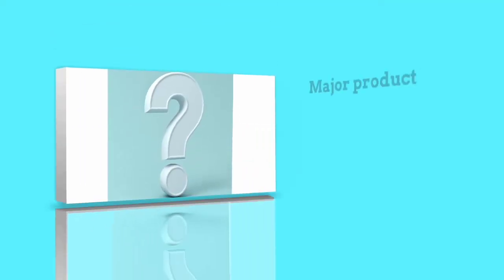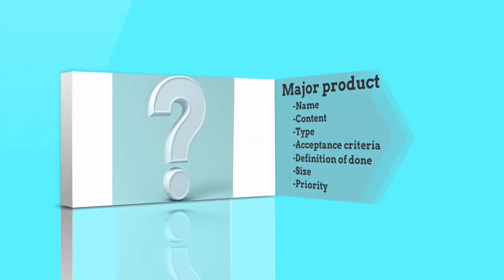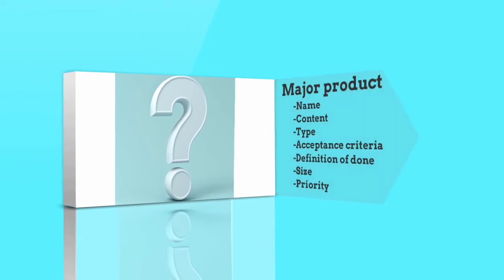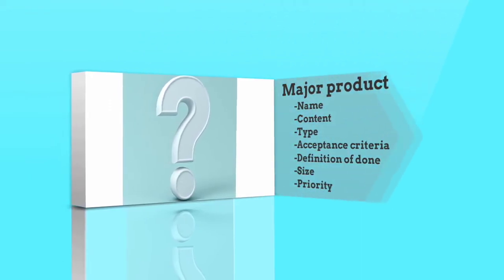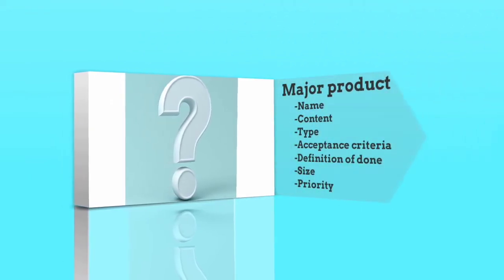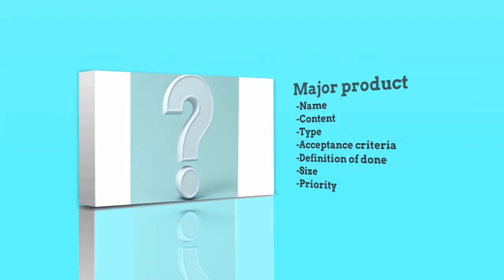Major product backlog item attributes include: name, content, type, acceptance criteria, definition of done, size, and priority.